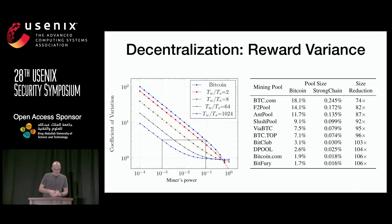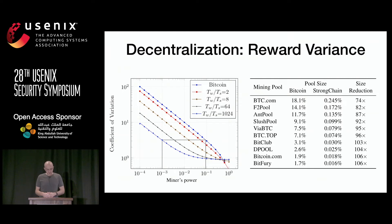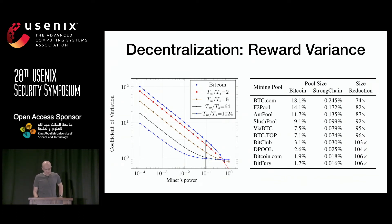The first result I present is decentralization, which we define in terms of reward variance. On the left you can see the coefficient of variation depending on miner power. Miners in Strong Chain can have 100 times weaker computing power but still achieve the same reward variance as in Bitcoin. In practice, the largest mining pool btc.com has about 18% of Bitcoin's computing power; in Strong Chain, an equivalent pool with the same reward variance could be as small as 0.25%. This means we could effectively have a large number of small pools.